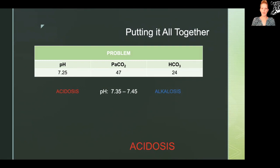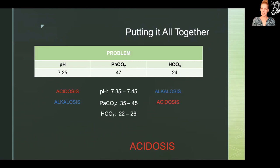The second value we look at is our partial pressure of carbon dioxide, and we see that it's 47. Our normal was 35 to 45, so it's a little bit high, and that is trending toward acidosis as well. Finally we look at bicarbonate — we see that it's 24, and our normal value was 22 to 26, so that is actually normal. Since the carbon dioxide was abnormal but the bicarbonate was normal, we now know that we have respiratory acidosis.